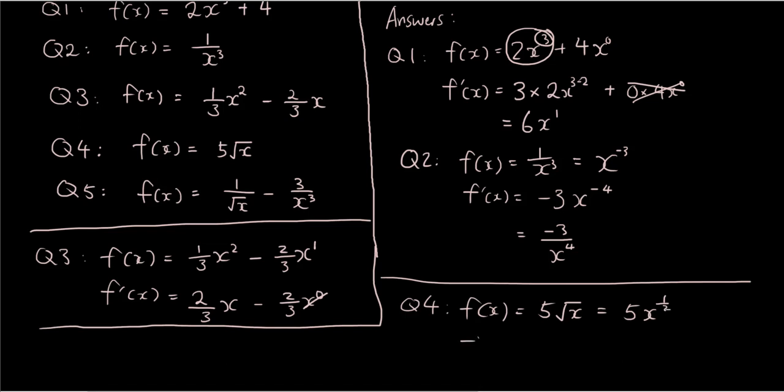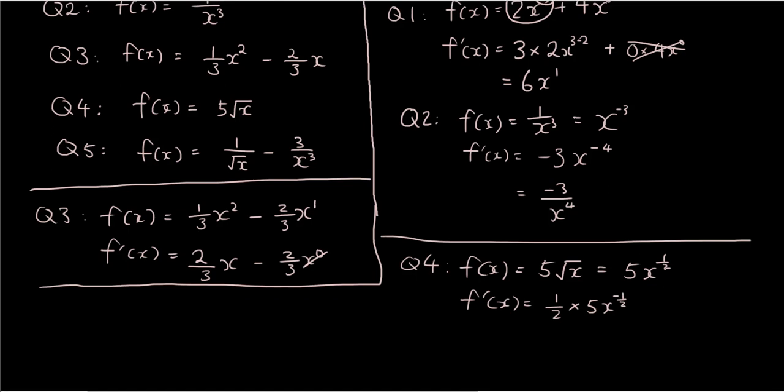So f'(x) is equal to half times 5x, half minus 1 is negative a half. Rearranging this becomes 5 over 2x to the power of a half, or you can say 5 over 2 times the square root of x.